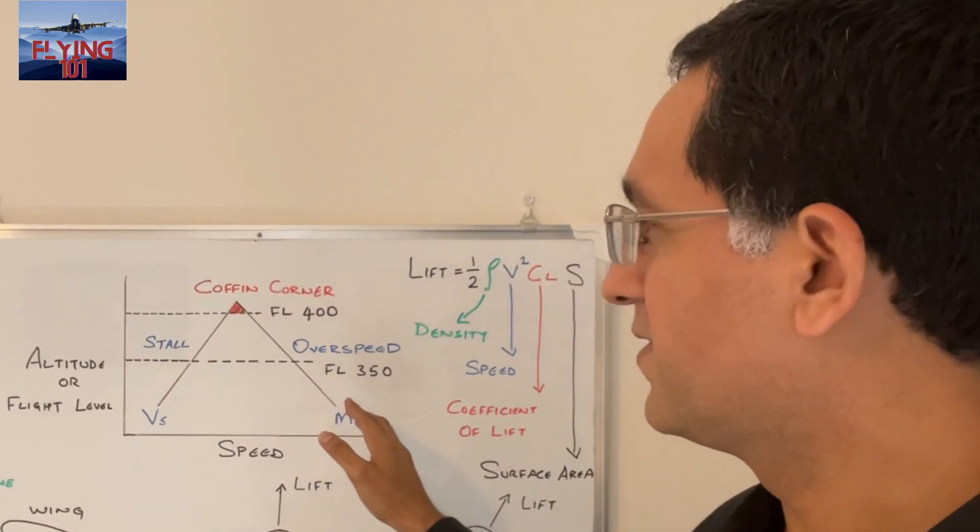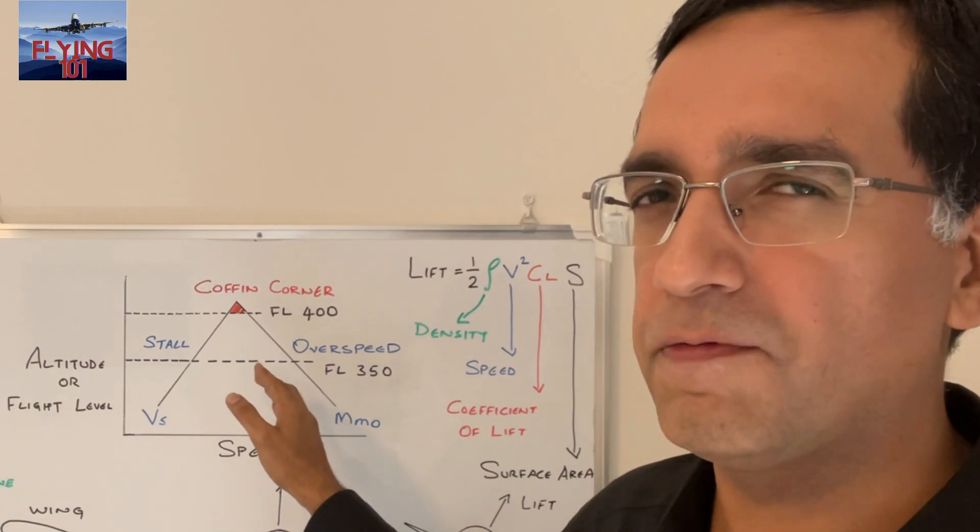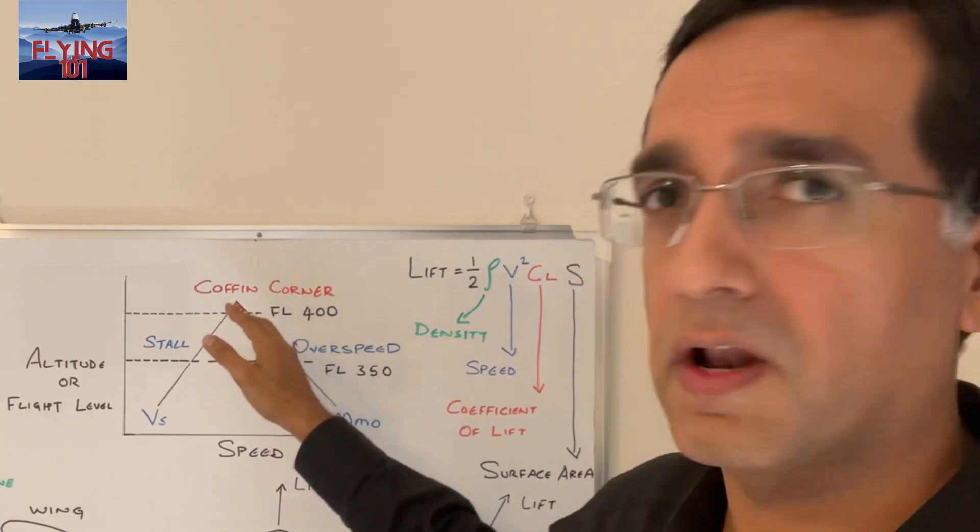On the right side, we can see that the margin to the high speed buffet, the stall buffet, decreases as the aircraft climbs.